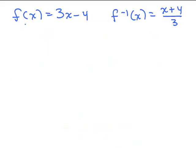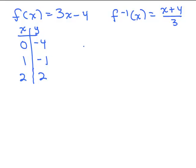We have f(x) = 3x − 4 and f⁻¹(x) = (x + 4)/3. We can verify with a table: when x = 0, f gives −4; when x = 1, f gives −1; when x = 2, f gives 2. For f inverse, plugging in −4 gives 0, plugging in −1 gives (−1 + 4)/3 = 3/3 = 1, and plugging in 2 gives 2. These are the reverse ordered pairs, confirming correctness.